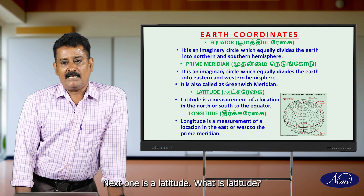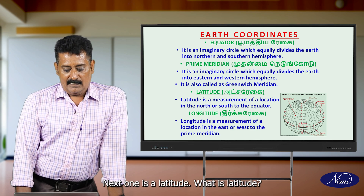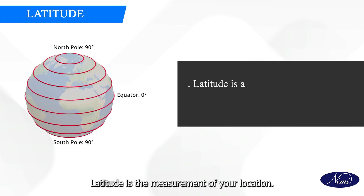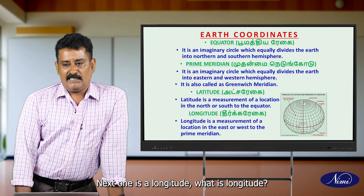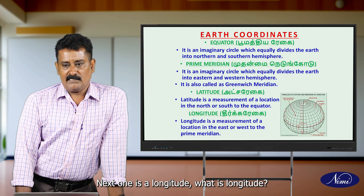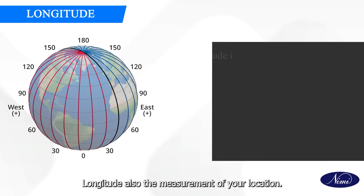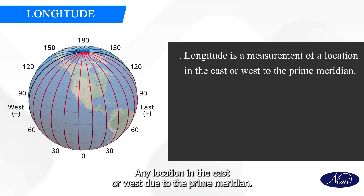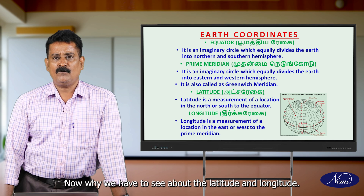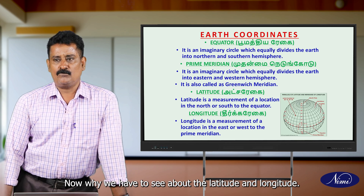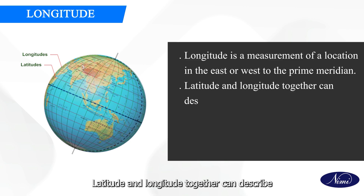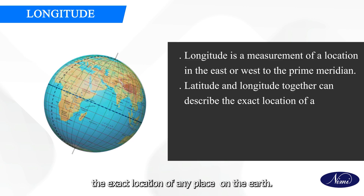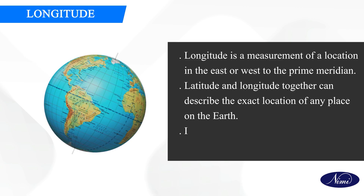Next one is latitude. What is latitude? Latitude is the measurement of a location — any location in the north or south relative to the equator. Latitude and longitude together can describe the exact location of any place on the earth.